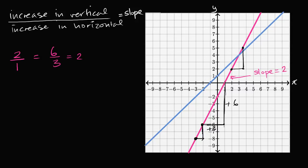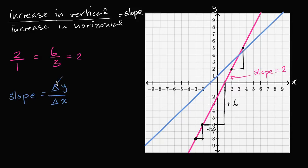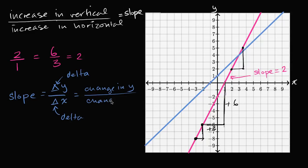What about the blue line — what would be its slope? Let me rewrite the definition of slope in a way you'll typically see it. Slope is the change in vertical for a given change in horizontal. I'll introduce new notation: change in y divided by change in x, where y is our vertical coordinate and x is our horizontal coordinate. The triangle symbol is the Greek letter delta, used in math to represent 'change in.' So slope equals delta y divided by delta x — change in y divided by change in x.